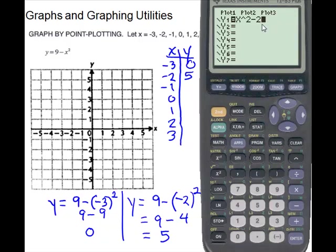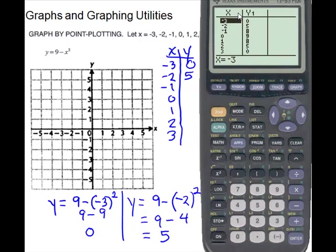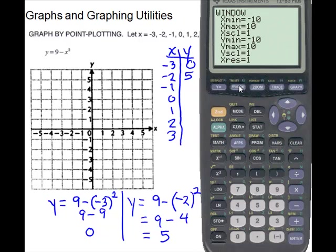Now we'll pull the calculator back up. We still have our original equation — we'll clear it and enter this new one: 9 minus x to the second. Enter, then graph. This one is an upside-down parabola. Let's get the rest of the values from the table using second table — the table is still set with the same increments and starting value. So negative 3 gives 0, negative 2 gives 5, and here are the others. Our window is still the standard window.